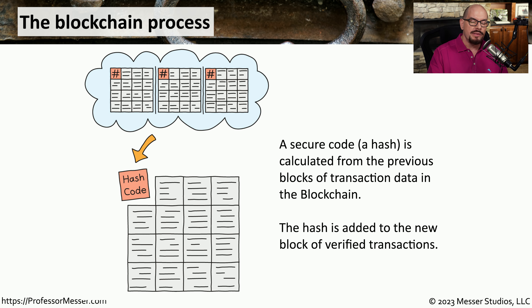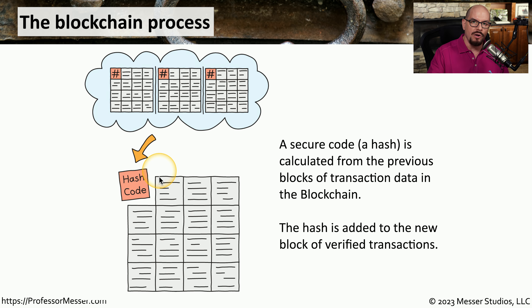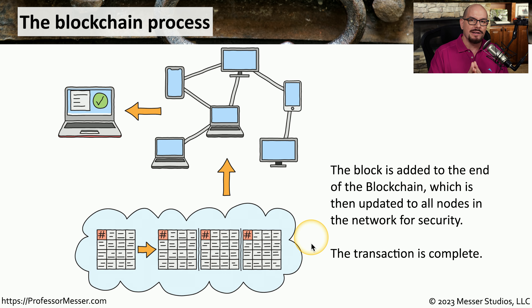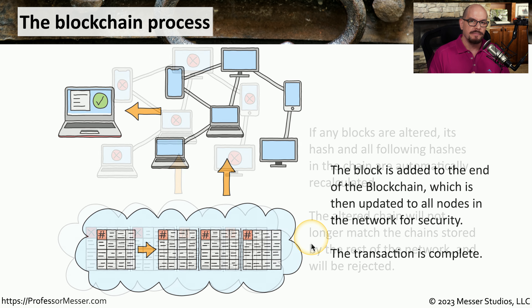To complete the block, we add a hash to the block, and that provides integrity of all of the transactions that are part of this particular block. A copy of this block is now sent to everyone who has a copy of this particular blockchain's ledger.